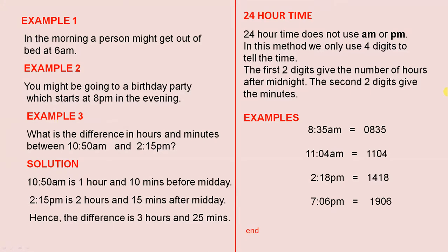Example 1. In the morning, a person might get out of bed at 6 AM. Example 2. You might be going to a birthday party which starts at 8 PM in the evening.